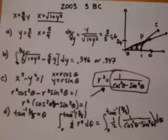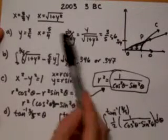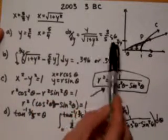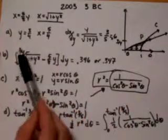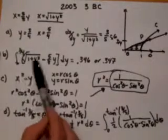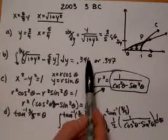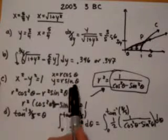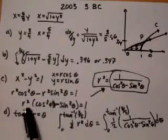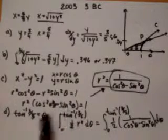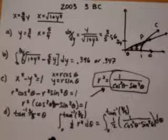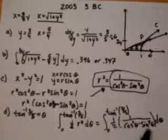Points on this one: one point for the coordinates of P, one for the value of dx/dy. One point on B for the limits of integration, one for the integrand and one for the answer. C: one point for substituting r cosine theta and r sine theta in, one for isolating r squared. For D: one point for the limits of integration and one for the integrand.